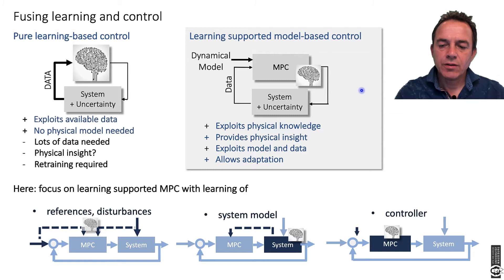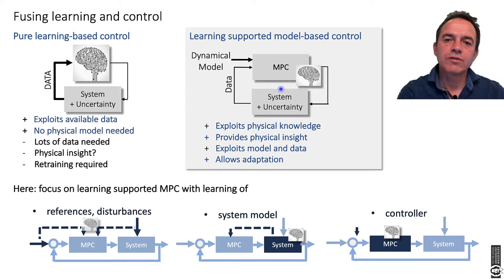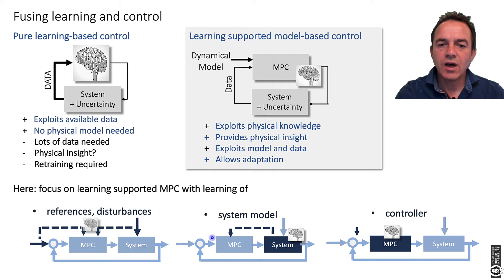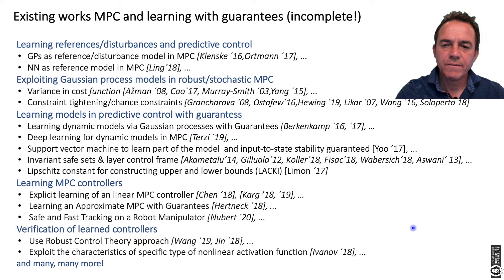I don't want to use one of the two approaches in isolation — I want to fuse them. I want to use learning in MPC. In predictive control we have cost functions, constraints, and models. What you will see in the following is we will use learning for different aspects: references and disturbances, system models, and I'll give an outlook on learning the controller itself.